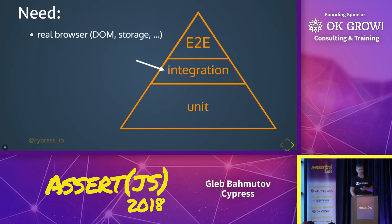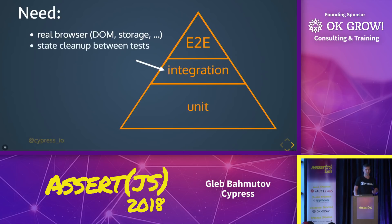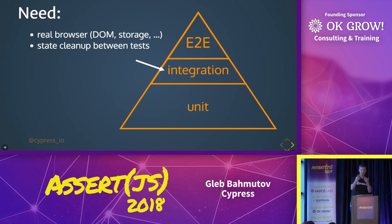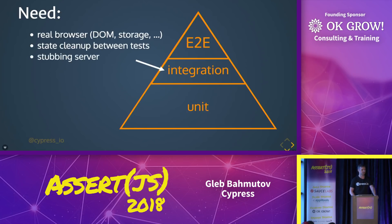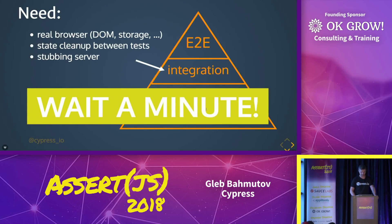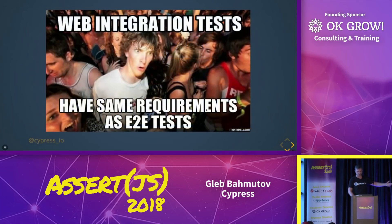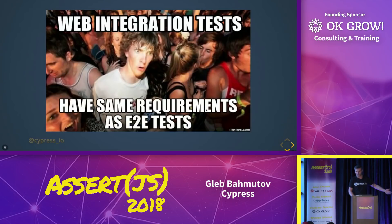So what do we need for good integration tests? We probably need a real DOM. Don't work against an emulation of a DOM that's behind — work with a real browser. You probably want to clean up the state between the tests, because your test might actually be trying to break stuff. You don't want broken pieces of data and state when the next test starts. You want to stub the server, because you might not have something running. These are all requirements for end-to-end tests: real DOM, stopping the server.